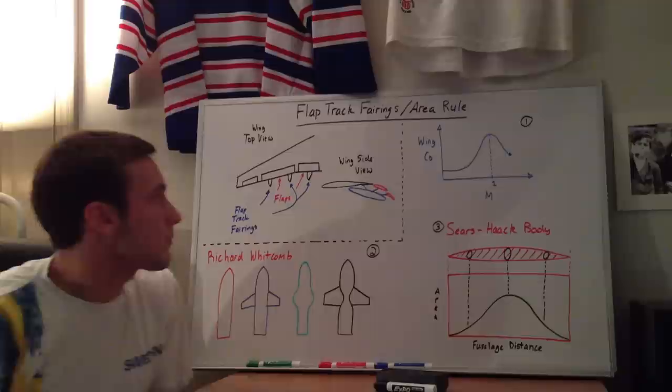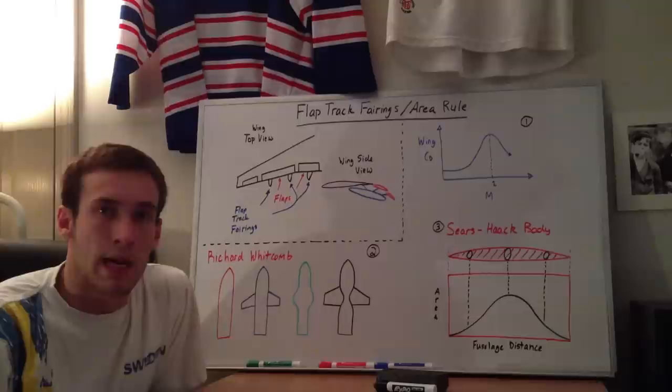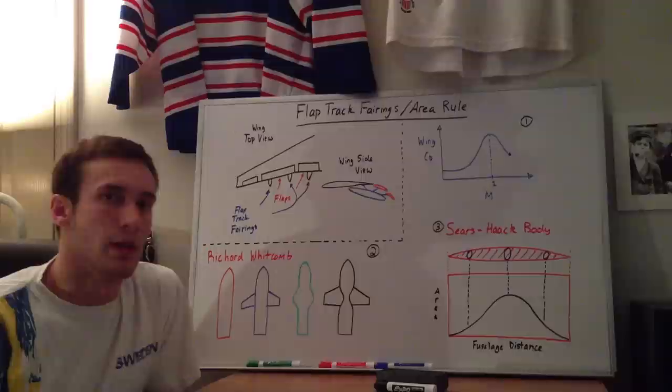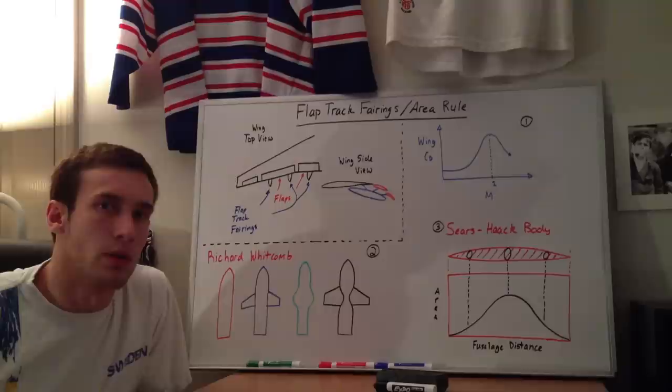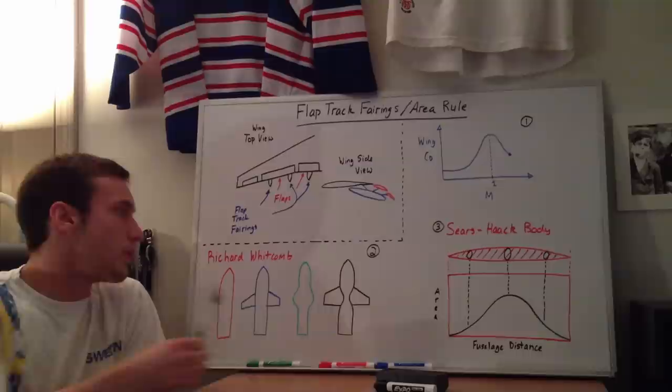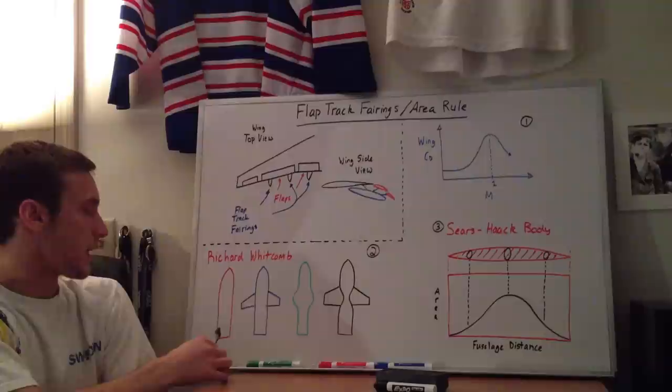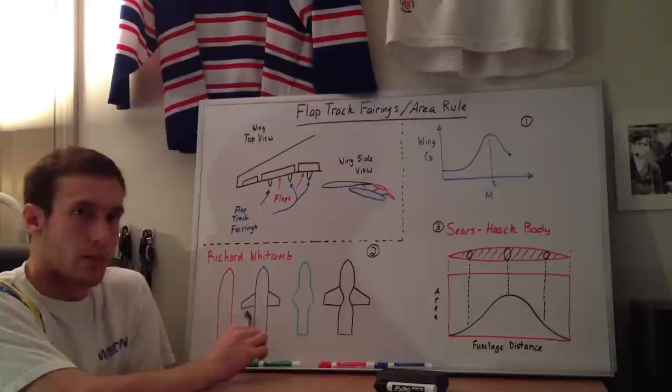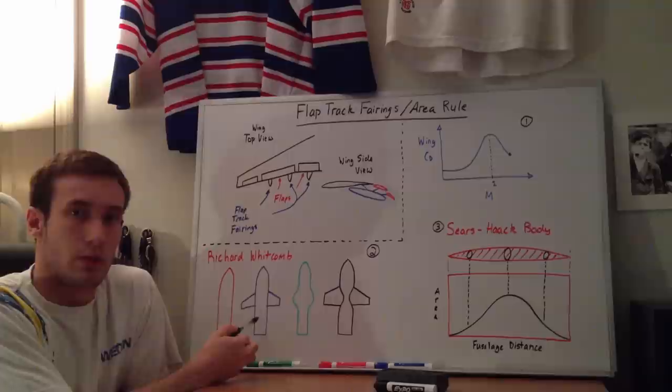Wave drag is obviously bad — any type of drag is bad, but wave drag in the transonic regime is particularly bad. What happened was a guy named Richard Whitcomb, who worked at what was called NACA, which is now NASA, did some tests with different shapes in transonic flows. These are the different shapes he was testing for wave drag: this one is a normal bullet-shaped body with a certain wave drag, and then he added wings to it, which increased the wave drag significantly.